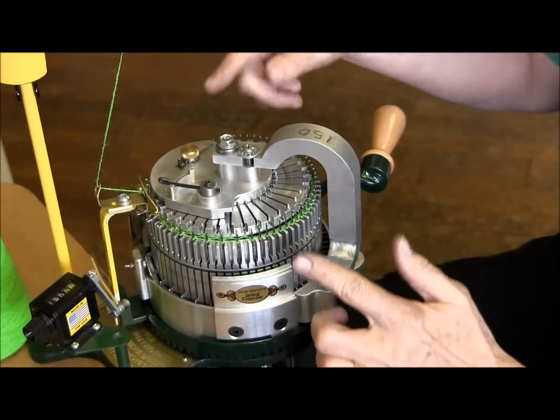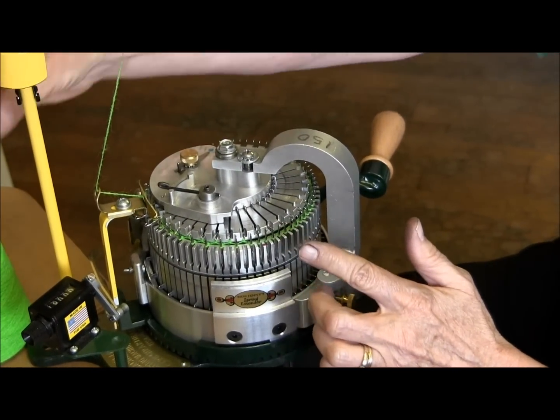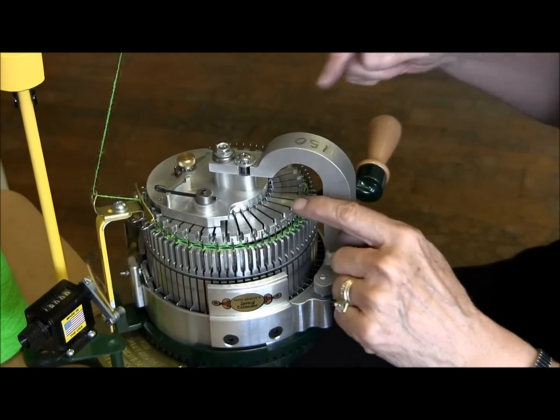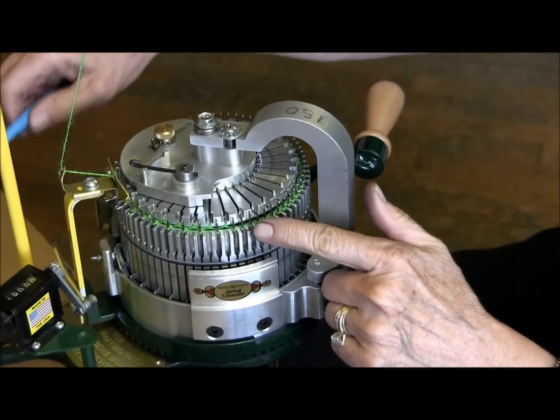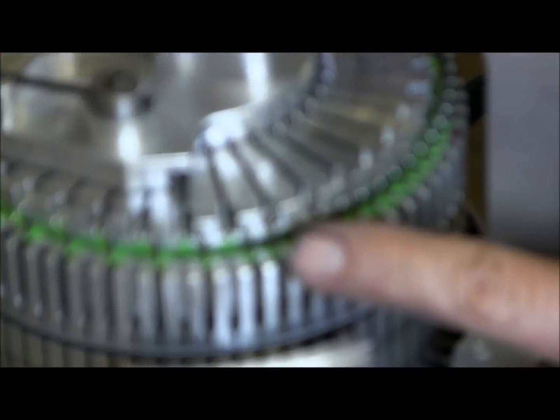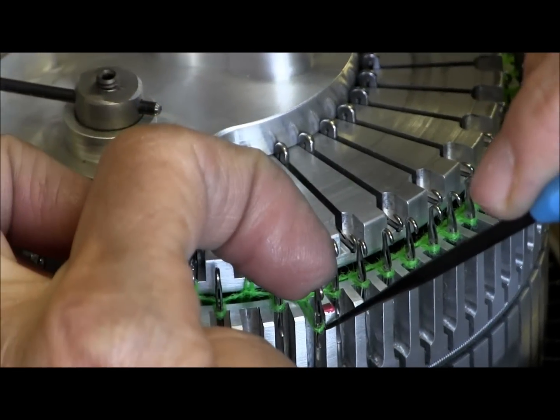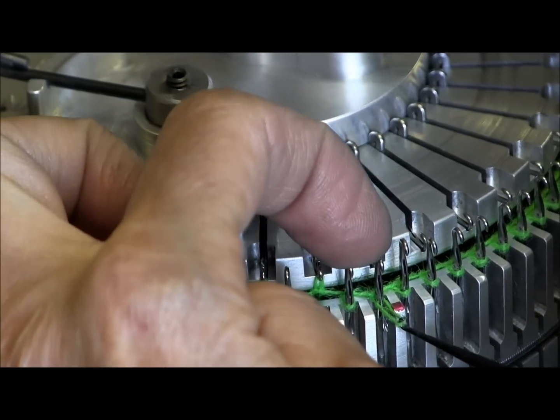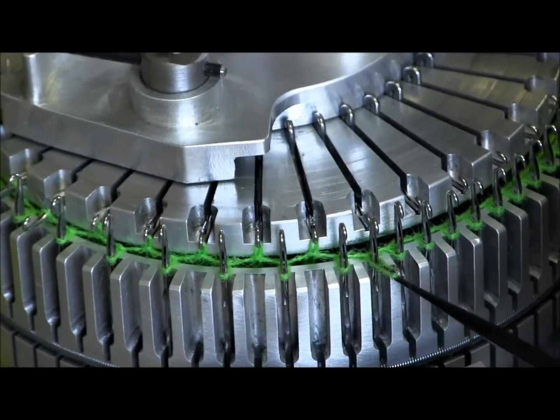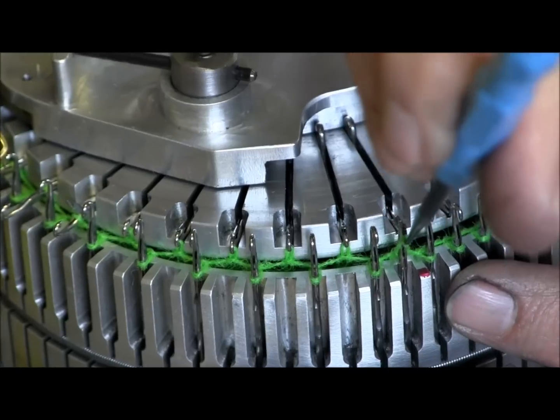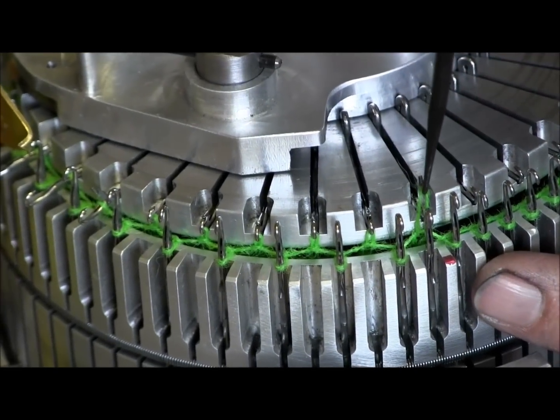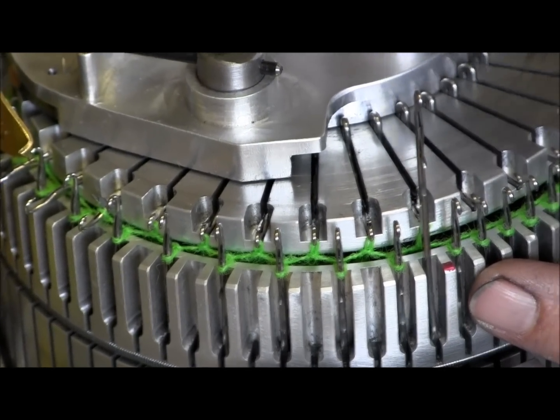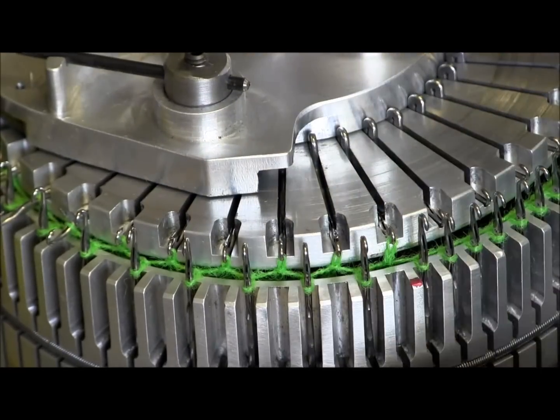We ended up cranking about four or five extra rows with the scrap yarn. This is in between socks. The ribber needles are now in place, latch is open. And now we need to transfer the cylinder stitch onto the ribber needle. So we'll start on the left so you can see it. I pull out the cylinder needle. And I take the tool, catch the stitch, and I slide it over the top of the cylinder needle and onto the ribber needle.